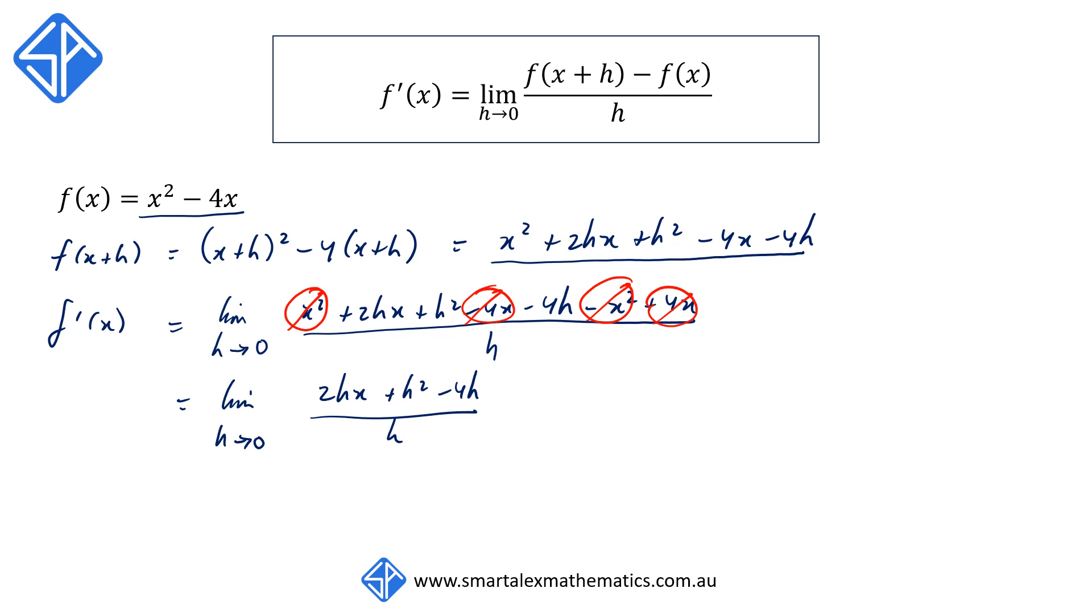Now, remember, we can't divide by 0, but what we can do is factorize out the h so that we get h outside the bracket 2x + h - 4 over h. This then allows us to cross off the h, and